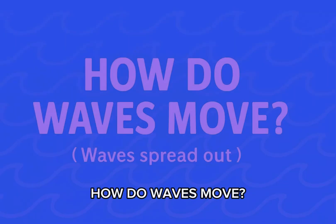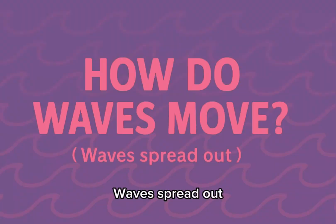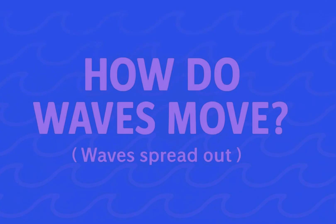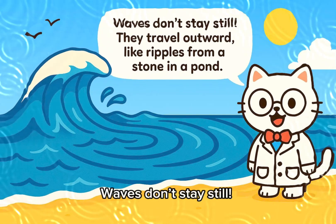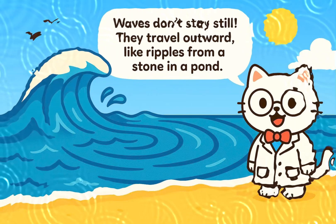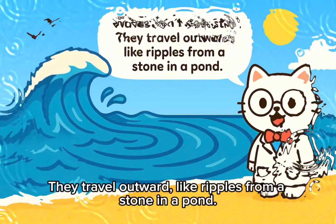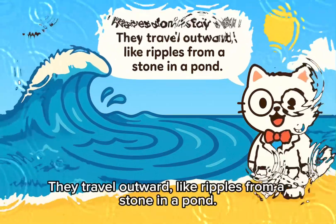How do waves move? Waves spread out. Waves don't stay still — they travel outward, like ripples from a stone in a pond.